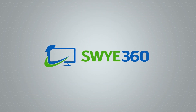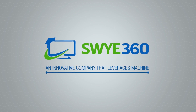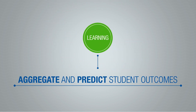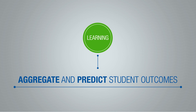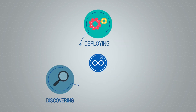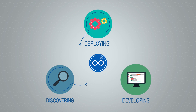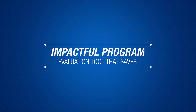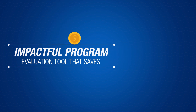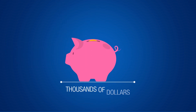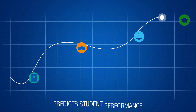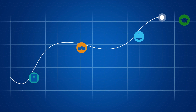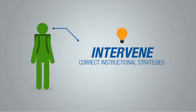Come Sway360, an innovative company that leverages machine learning to aggregate and predict student learning outcomes by deploying its technology, discovering and identifying gaps, and developing utilization frameworks. Our solution is the most impactful program evaluation tool that saves districts thousands of dollars, identifies softwares yielding significant learning gains, and predicts student performance. This allows administrators to be proactive in their approach to intervene and course-correct instructional strategies.